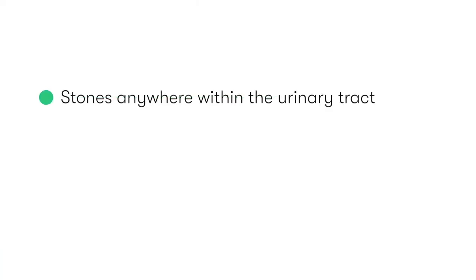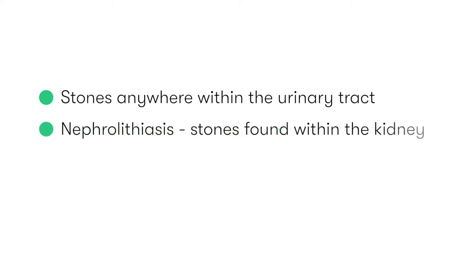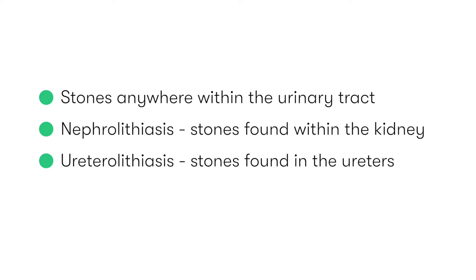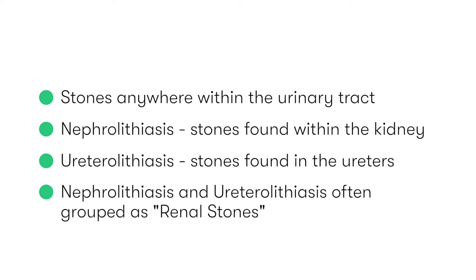Urinary tract calculi are stones that are found anywhere within the urinary tract. We use more specific terms to describe stones in specific locations. Nephrolithiasis refers to a stone found within the kidney, whereas ureterolithiasis refers to stones that lie within the ureters. Commonly, regardless of their location, stones tend to be referred to as a group called renal stones.